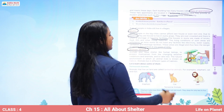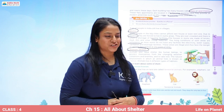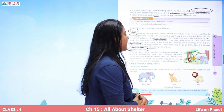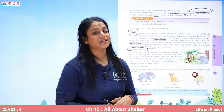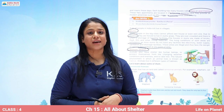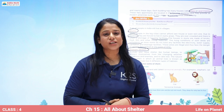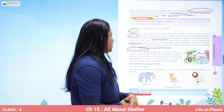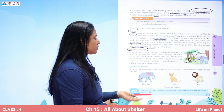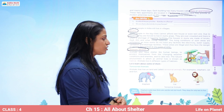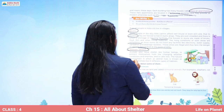Now comes the animal shelter. We have talked a lot about where humans live — let's talk about animal shelter. Animals also need shelter like human beings. Some animals live in water, some on land, some mostly spend their life in the air, and some live on trees. Just like human beings, animals need shelter to protect themselves from changing weather conditions, enemies, and to take rest. The natural environment in which an animal lives is known as its habitat.